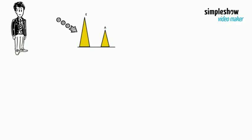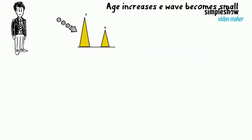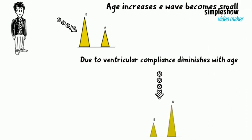In healthy young individuals, the E-wave will be larger than the A-wave; that is, the volume of blood transported during the rapid filling phase will be greater than that during atrial contraction. With age, the E-wave becomes smaller because ventricular compliance diminishes, and atrial contraction becomes increasingly important for ventricular filling.